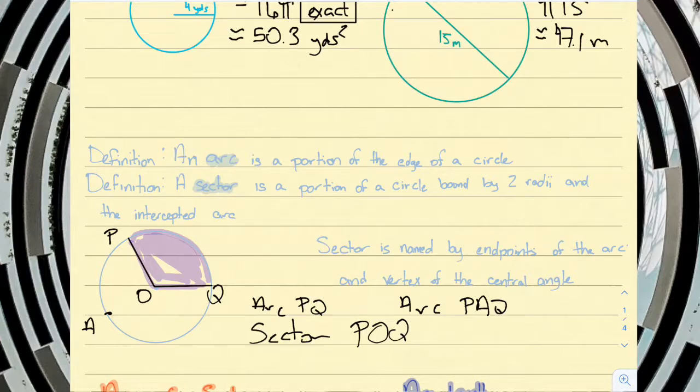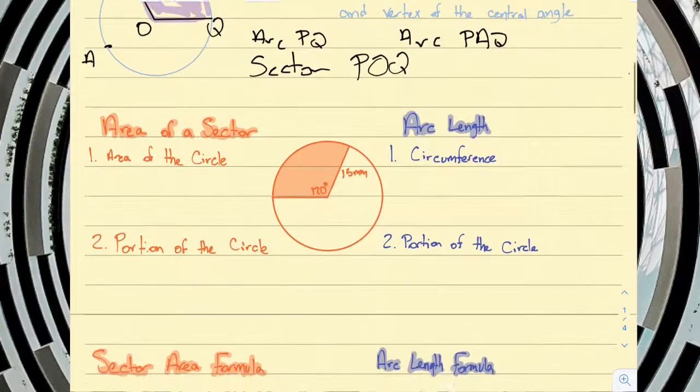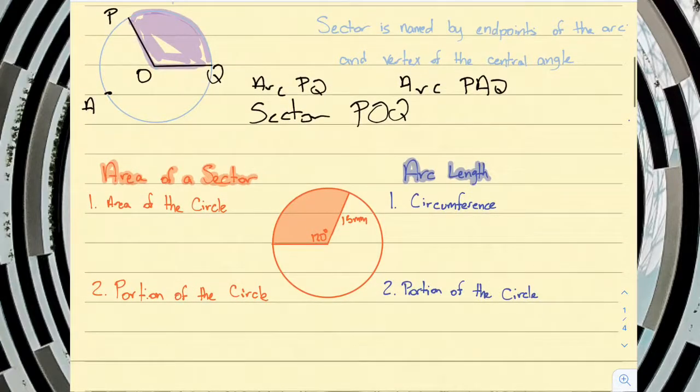So now what I'd like to do is I'd like to explore how we can find how long an arc is and how much space a sector takes up. All right, so here in this circle, we're going to find the area of that sector and the length of that arc. But first, we're going to relate them to the area and circumference of a circle. So let's start with the area.